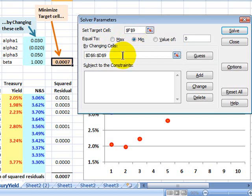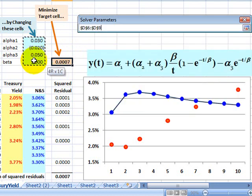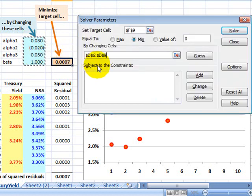And then here's the key by changing which cells. And this is what's great about solver. It will simultaneously optimize for all four of my inputs. And so that's all I need to tell it.